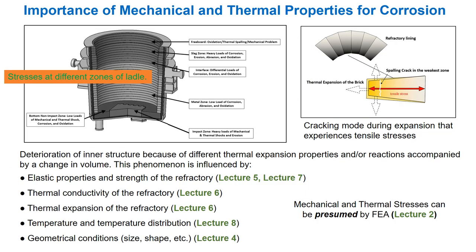Another factor — stress-assisted corrosion — is discussed here. All probable stress and corrosion-assisted failures are shown in a cross-section of a ladle, with respect to different zones. Deterioration of the inner structure occurs because of different thermal expansions and reactions accompanied by a change in volume. This phenomenon is influenced by the elastic properties and strength of the refractory, discussed in detail in lectures 5 and 7.